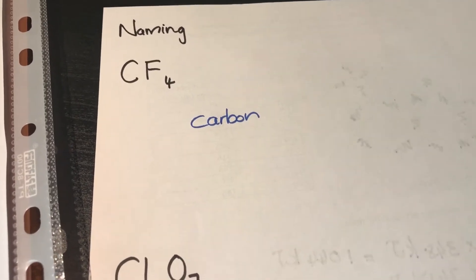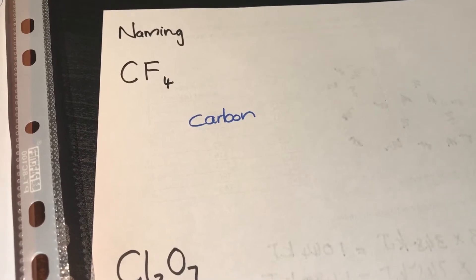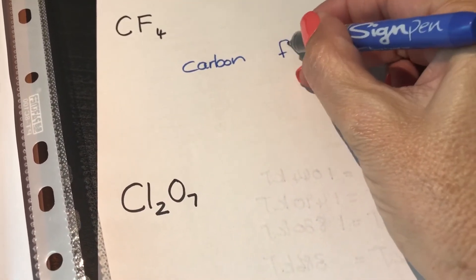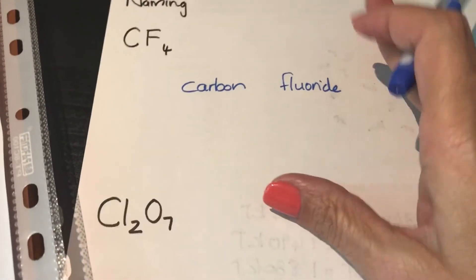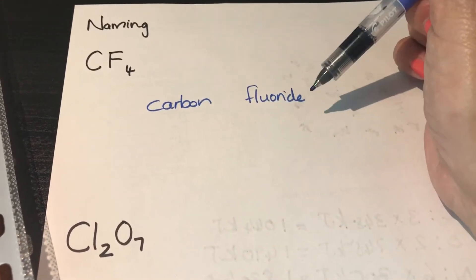For the second element, we will have to change the name of the element. Most of these elements get -ide. So we're looking at carbon fluoride. We have carbon and fluorine. The fluorine becomes fluoride.